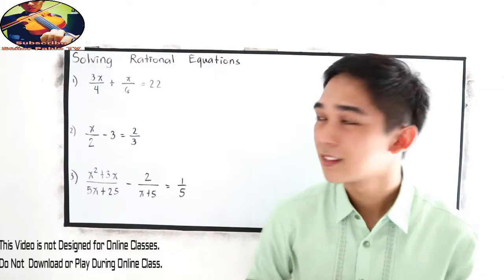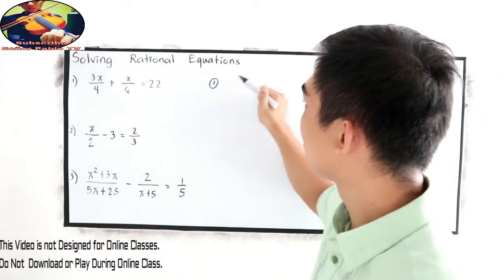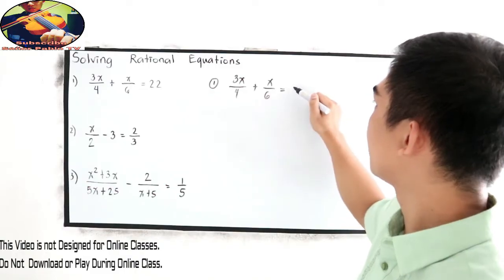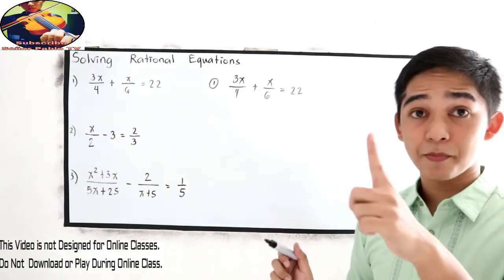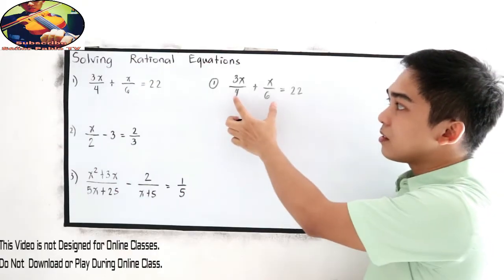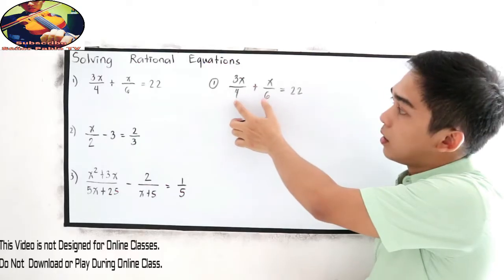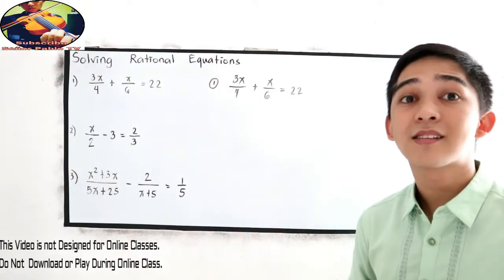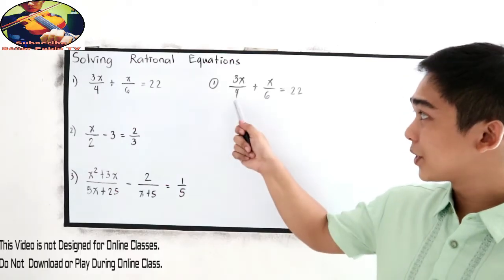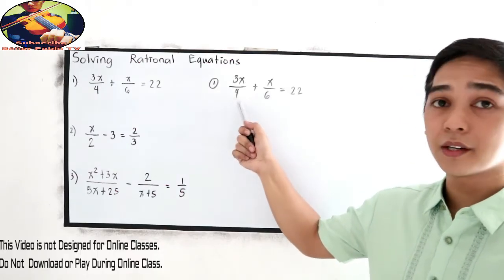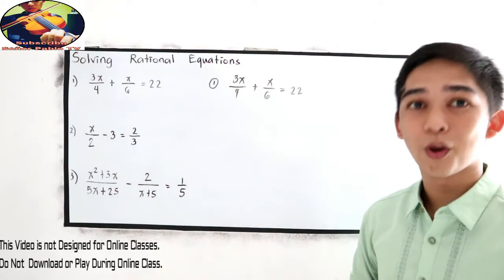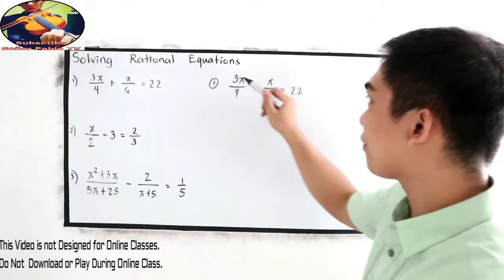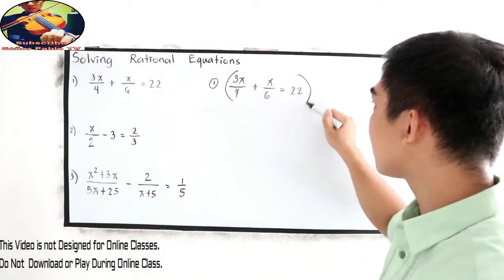Now let's solve number one. Three x all over four plus x over six is equal to twenty-two. Our first method: since this involves fractions or rational expressions, get the common denominator — the LCD, least common denominator. For 6 and 4, their LCD is 12.